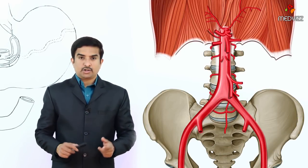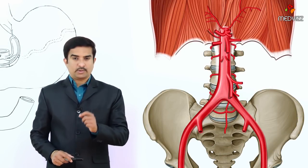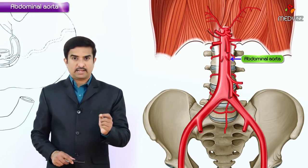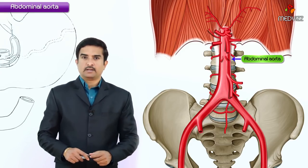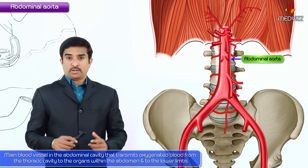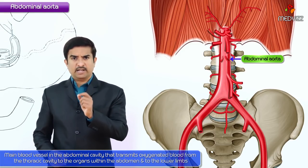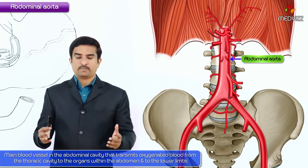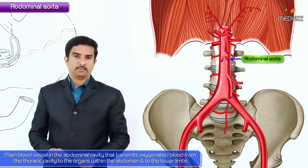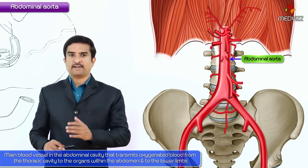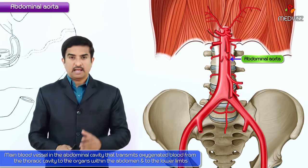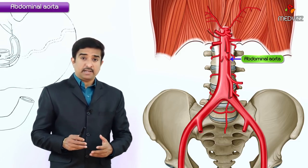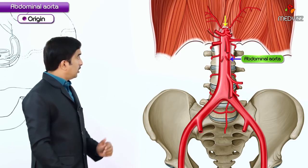In today's class we are going to discuss about the abdominal aorta as well as its branches. The abdominal aorta is the main blood vessel of the abdominal cavity that transmits oxygenated blood from the thoracic cavity to the organs within the abdomen as well as to the lower limbs.